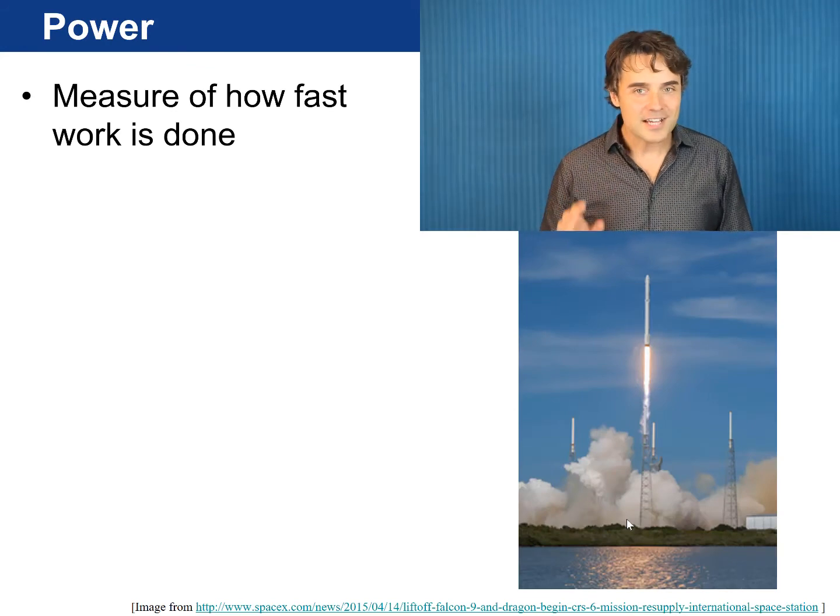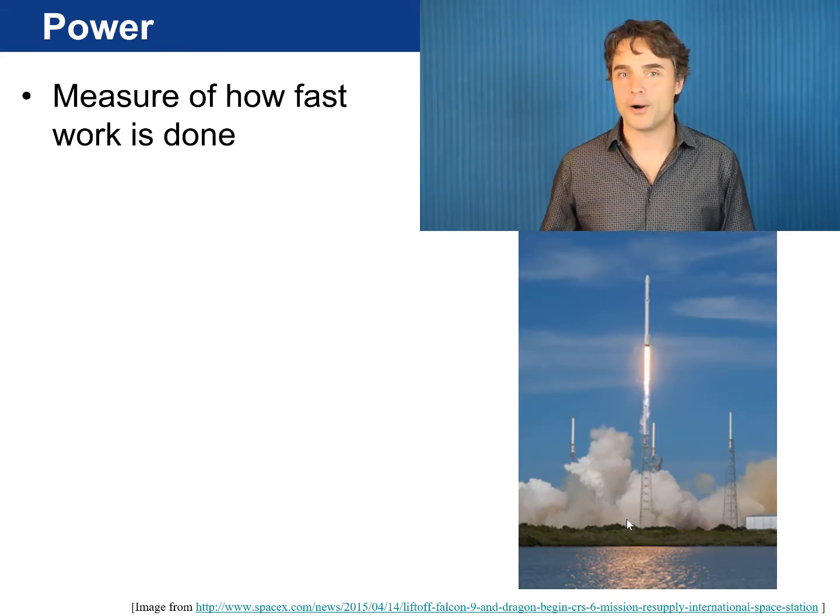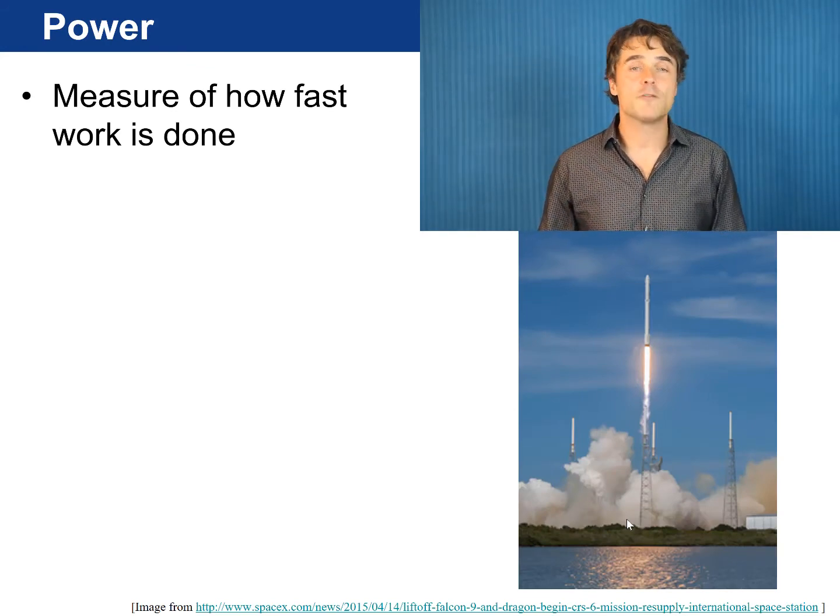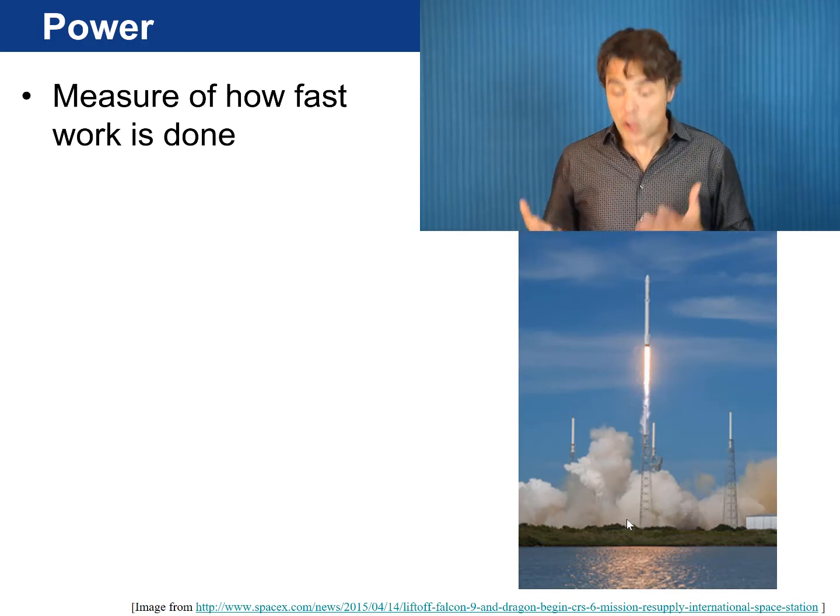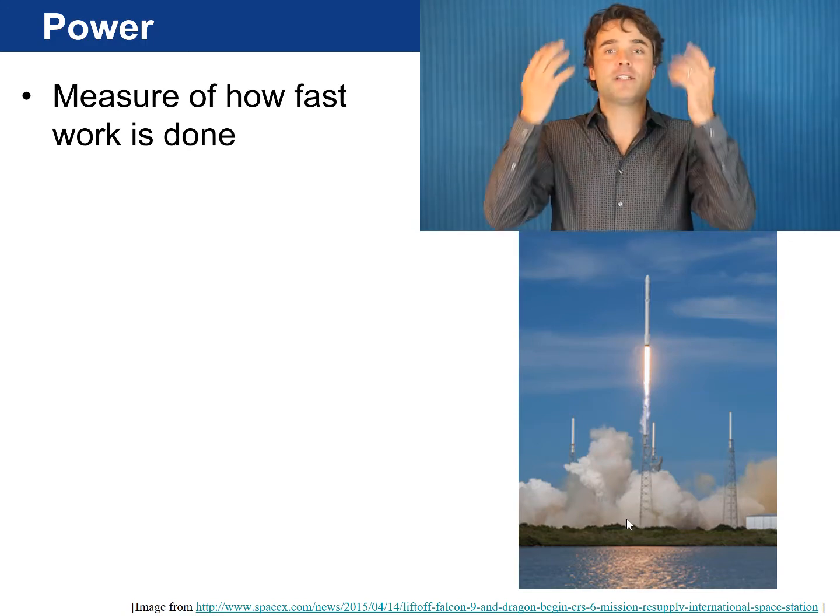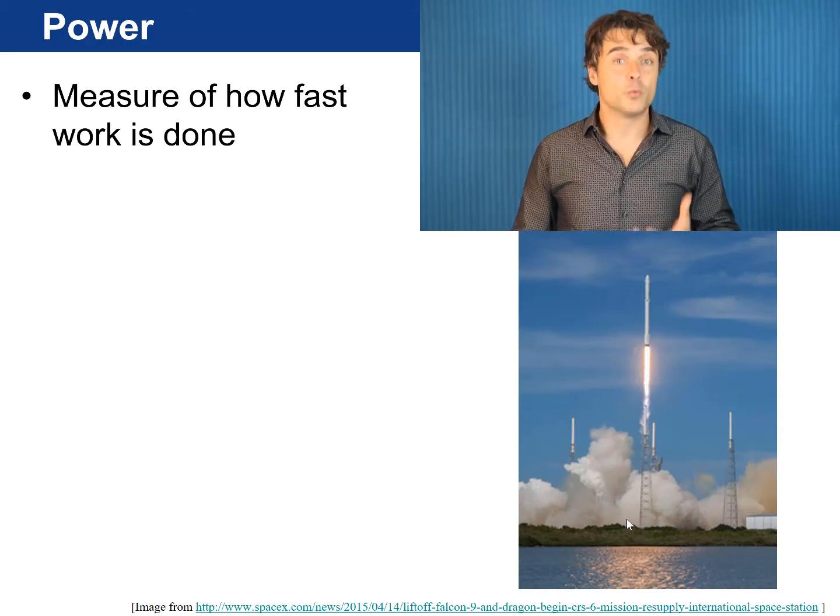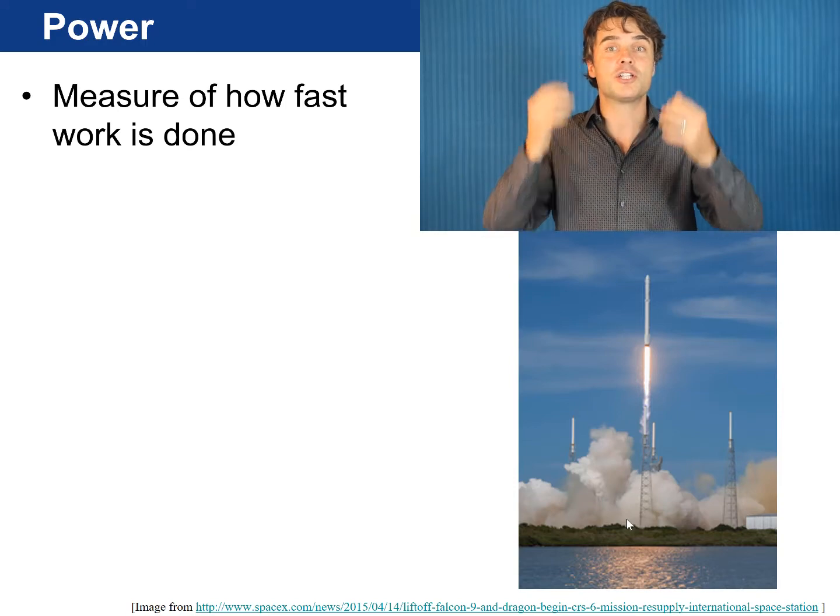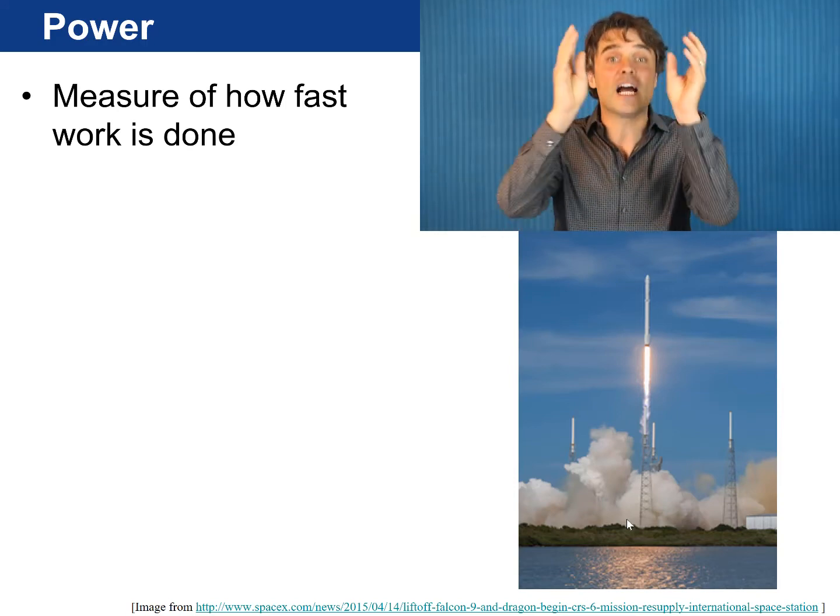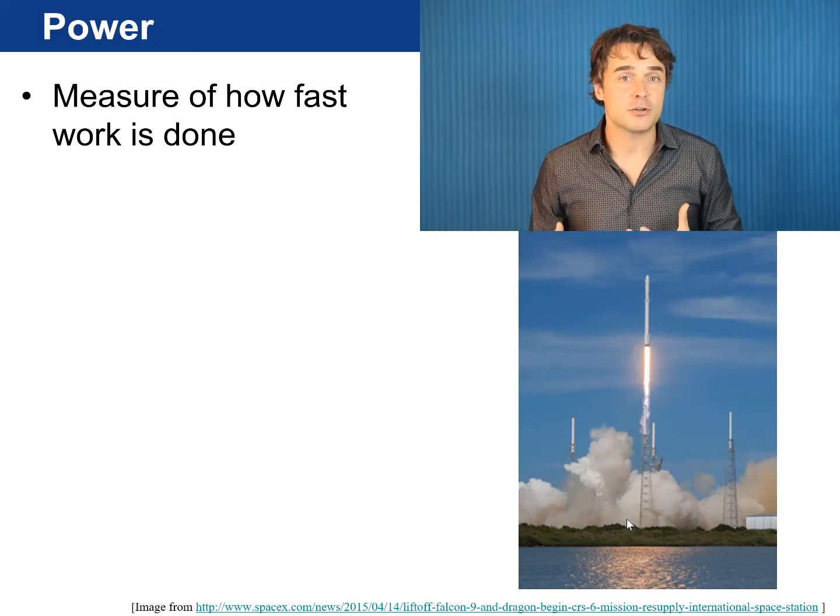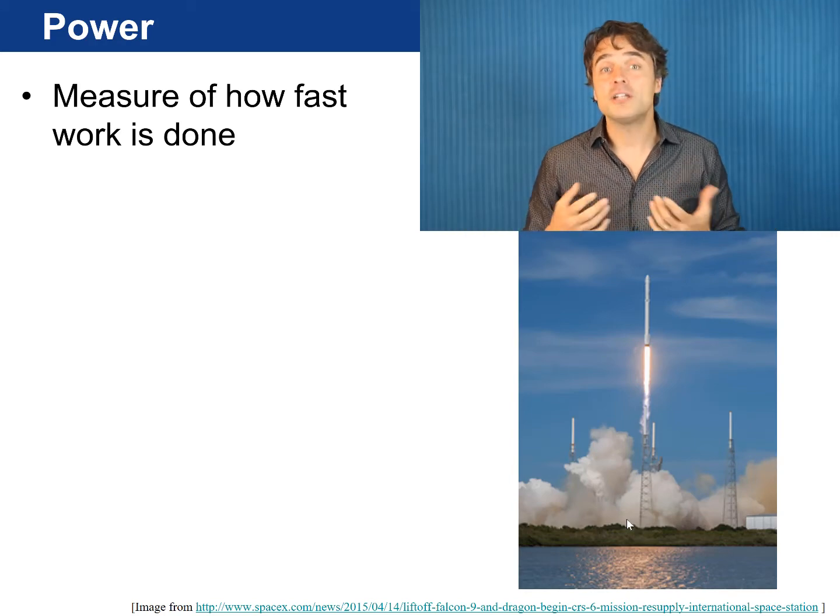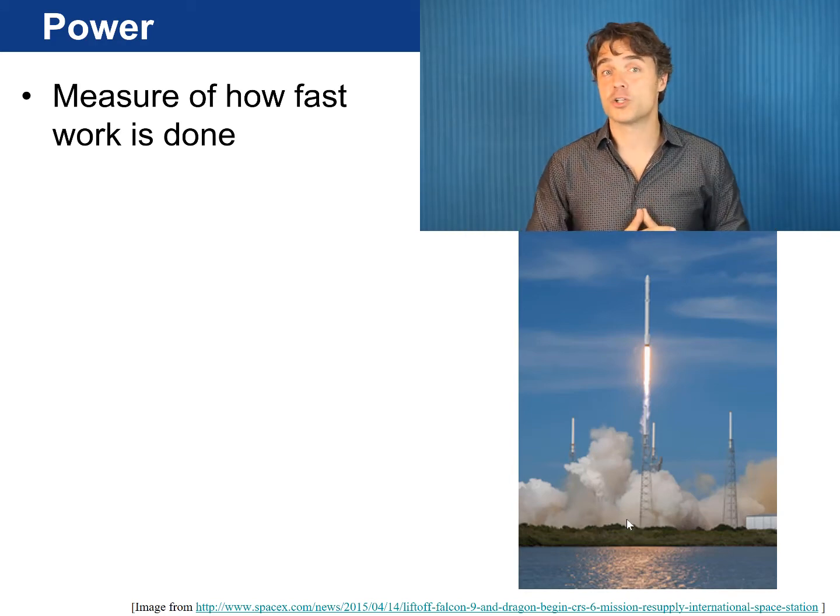The last section of this chapter is on power. Power is a measure of how fast work is done. You need a lot of power to lift this rocket up into the air for two reasons. One is that you're doing work against gravity, mgh. And the other is that the rocket is speeding up. So, the kinetic energy is increasing. And all of this is happening in a very short amount of time.